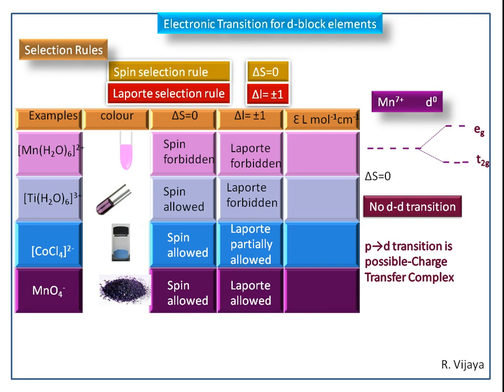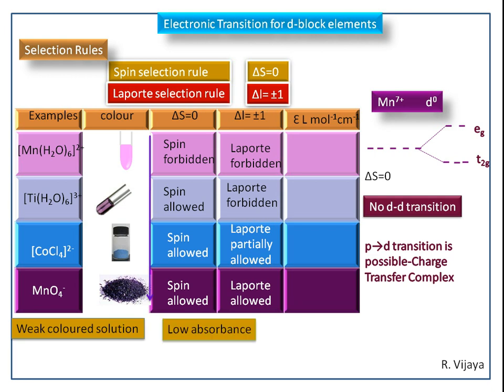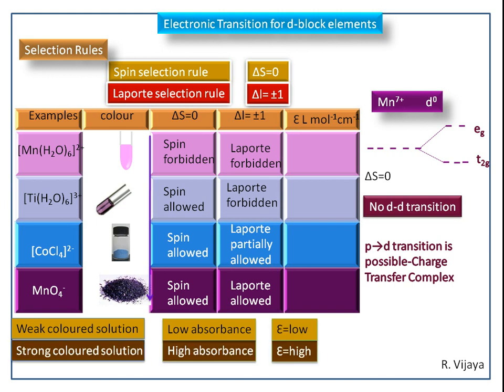In the forthcoming videos, we will discuss the charge transfer transition in detail. From the Hexa-Aqua-Manganese(II) complex to permanganate, the intensity of color of the complexes increases. Usually, a weak colored solution has low absorbance, so its epsilon value is low. For a strong colored solution, it will have high absorbance, so its epsilon value is high. We will see the expected epsilon values for these given complexes. In the next video, we will discuss the charge transfer transition and its types in detail.